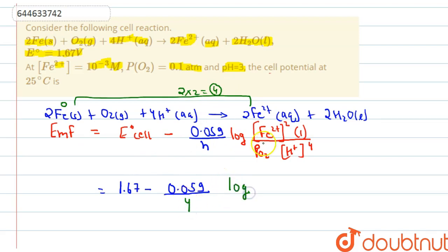Multiply log Fe2+ concentration. Concentration of Fe2+ is 10 to the power minus 3. Its square is 10 to the power minus 6. Multiply 1. It is divided by pressure of O2. Pressure of O2 is 0.18 atm is given.